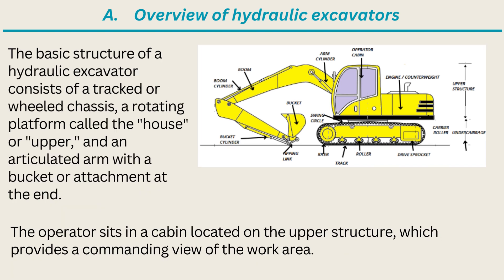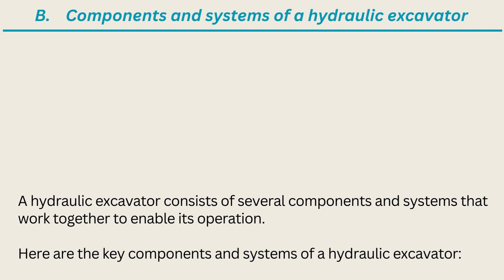The basic structure of a hydraulic excavator consists of a track or wheel chassis, a rotating platform called the house or upper structure, and an articulated arm with a bucket or attachment at the end. The operator sits in a cabin located on the upper structure, which provides a commanding view of the work area.